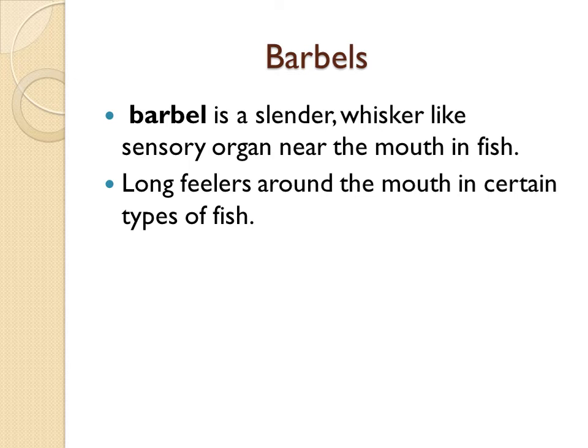A barbel is a cylindrical, whisker-like sensory organ near the mouth in fish. A whisker is a long projecting hair or bristle growing from the face or snout of many mammals, like a cat. Barbels can also be defined as long fillers around the mouth in certain types of fish — they are longer sensory organs near the mouth and have different types in different species.